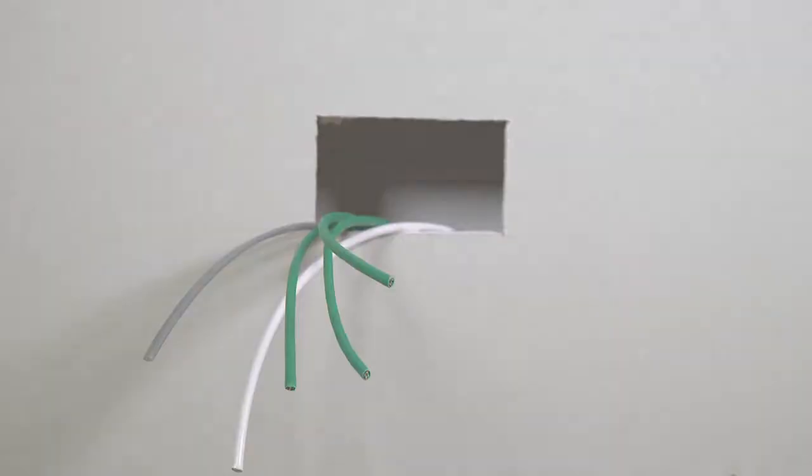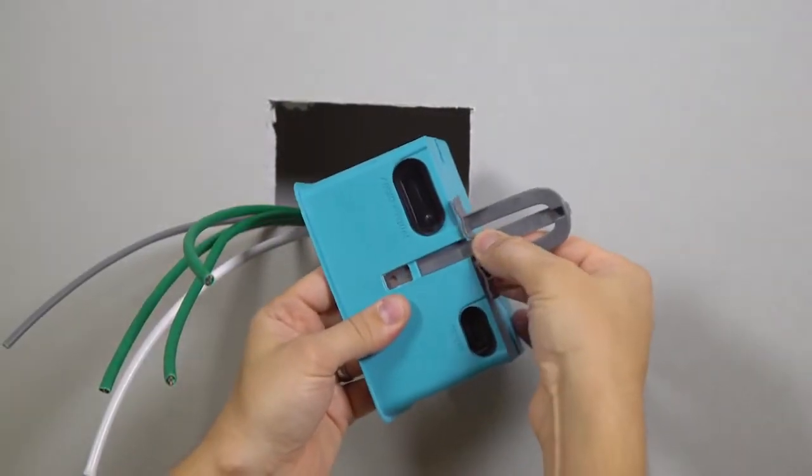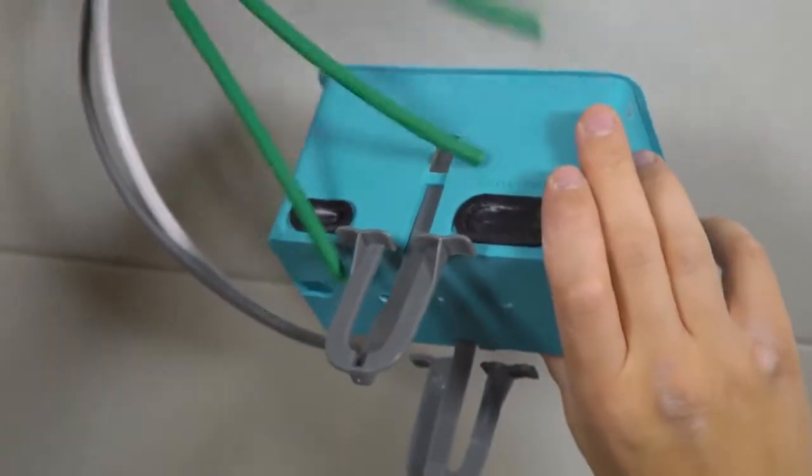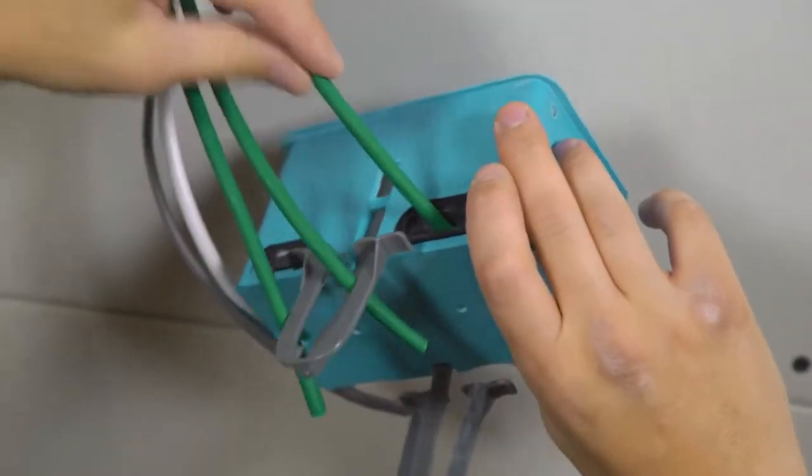Insert the cables. Take the blue installation box from the packaging and insert the fast fix straps into position. Now you're ready to insert the cables into the installation box through the grommets provided.